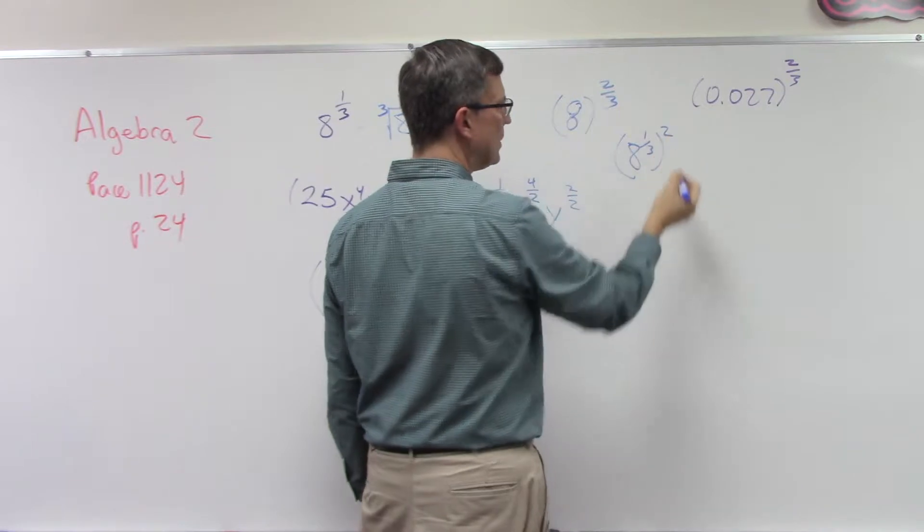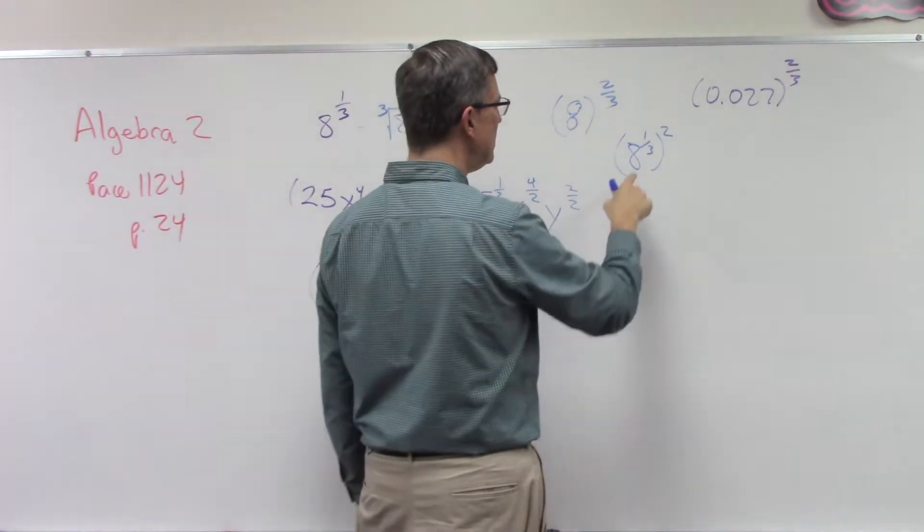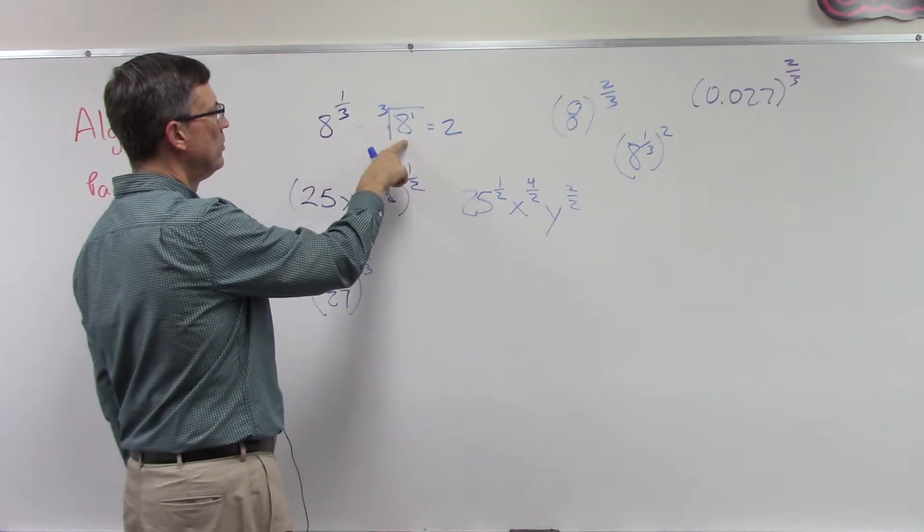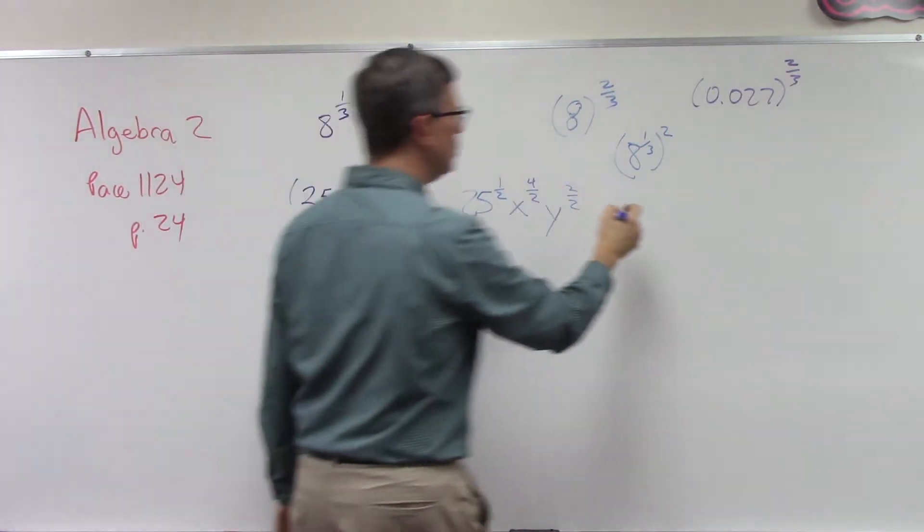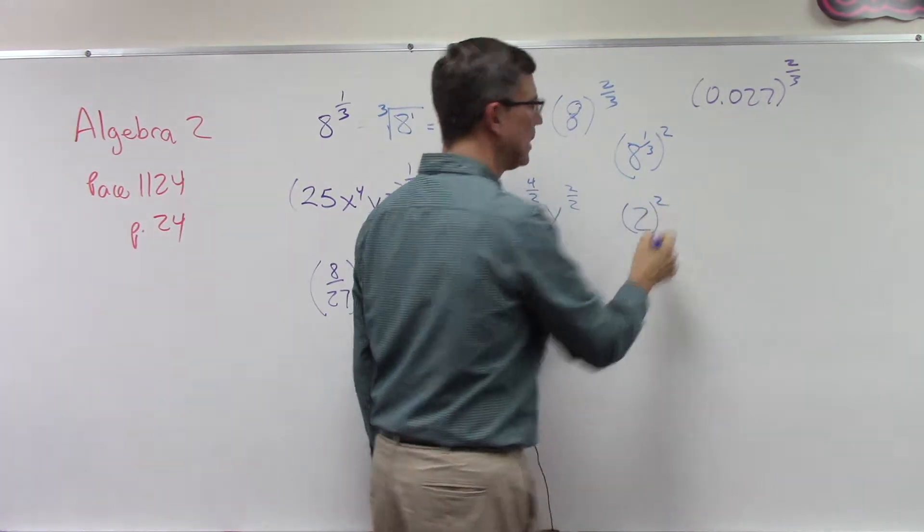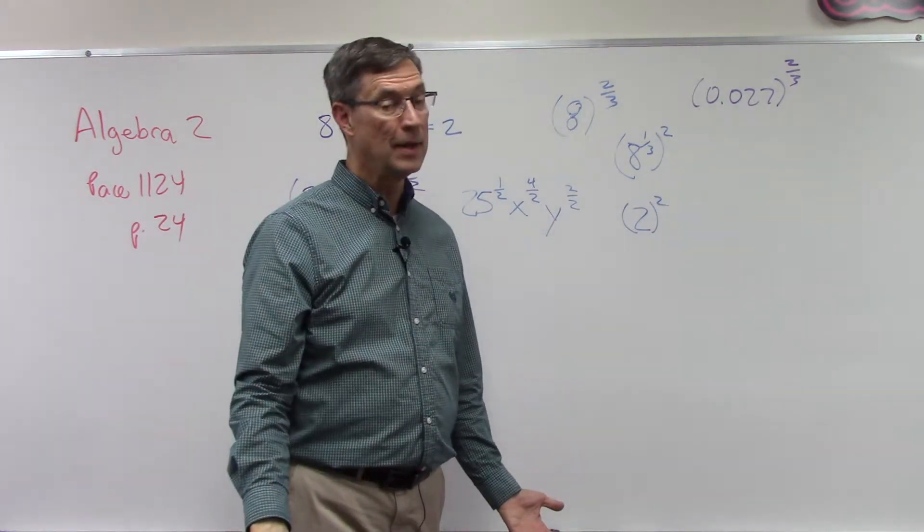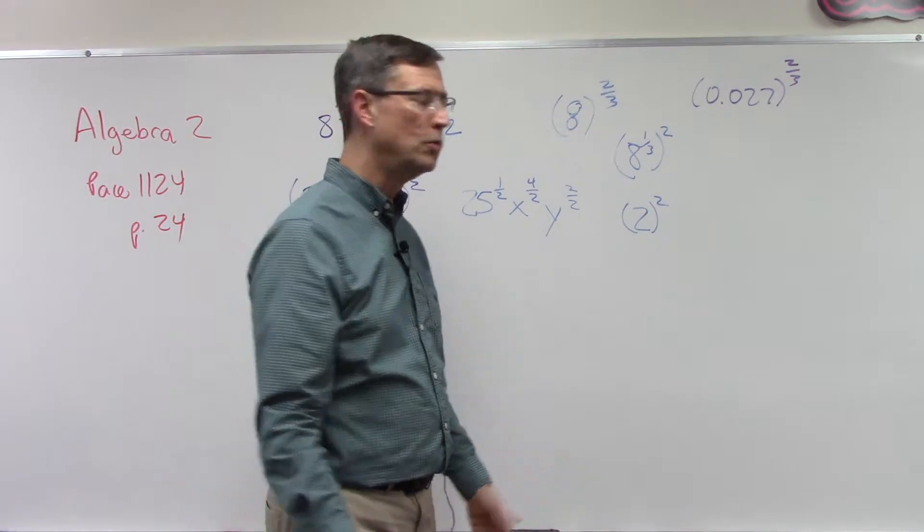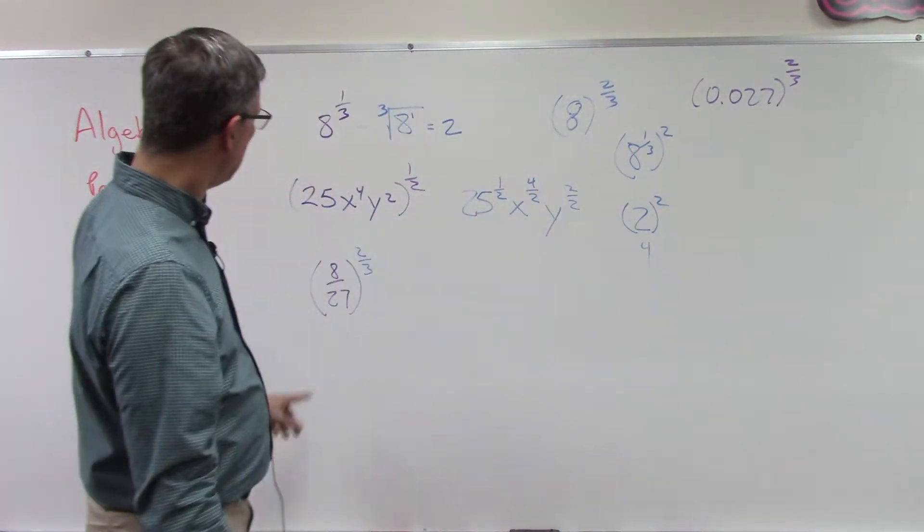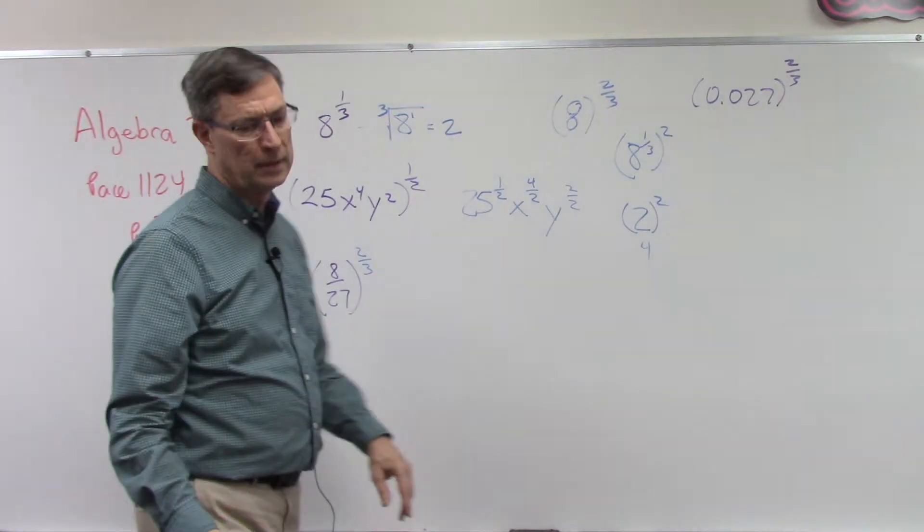Here's why: What is the third root of 8? Well, we have it right here. The third root of 8 is 2, so now I have 2 to the second power, and that's easy. 2 times 2 is 4. Piece of cake.